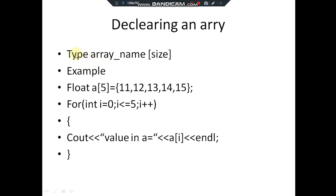The syntax for declaring an array consists of the data type, the array name, and the size. For example, the type of the array can be float, followed by the array name, and then the size in brackets. Here the array has a size of five, so it stores five values: one, two, three, four, five.